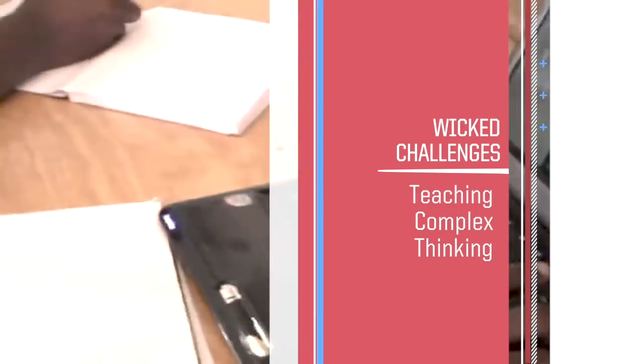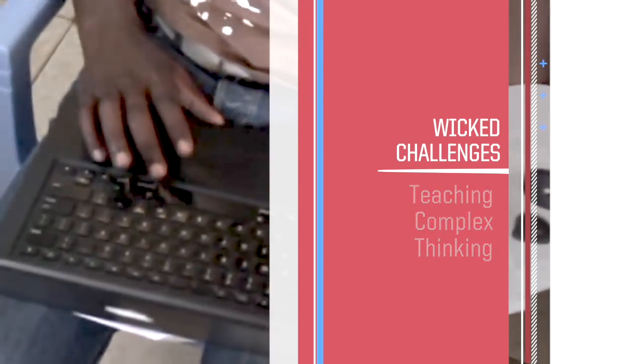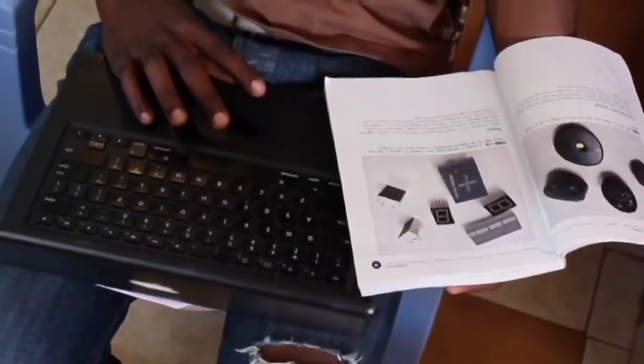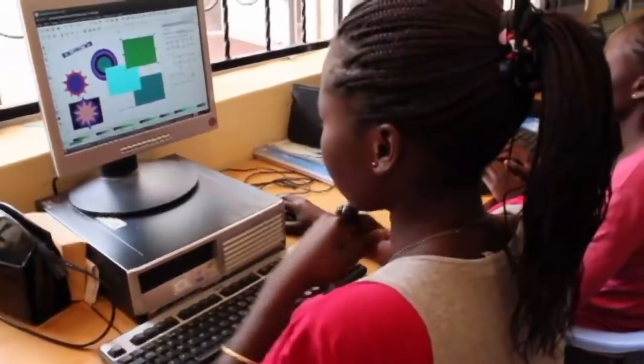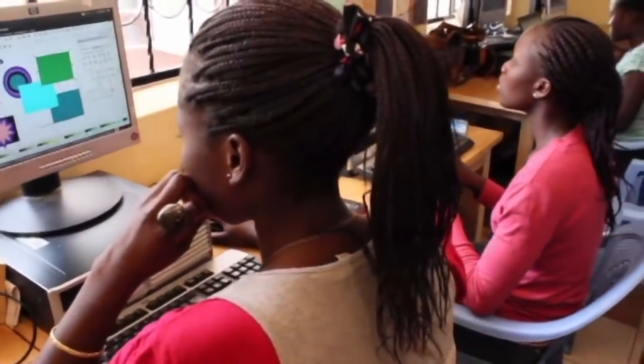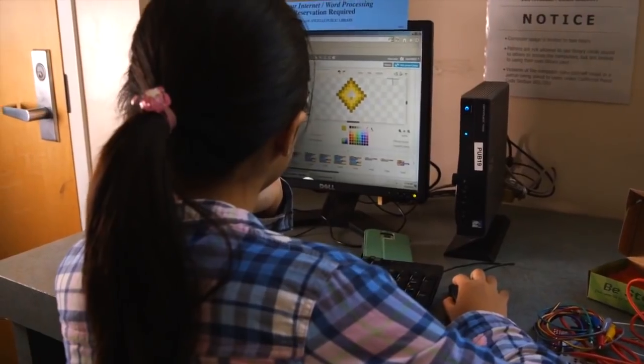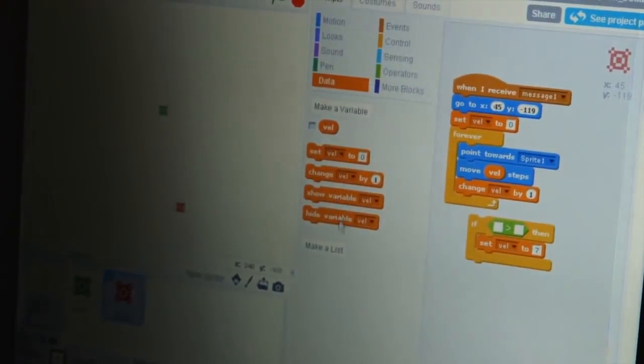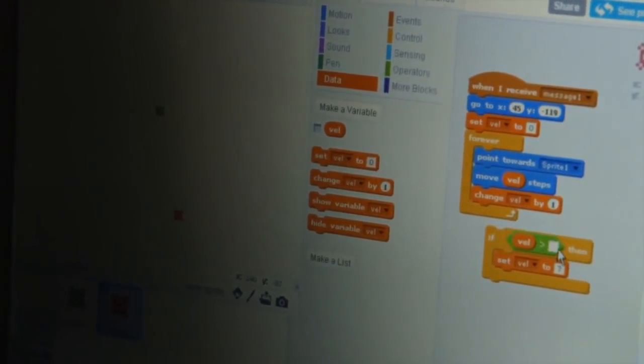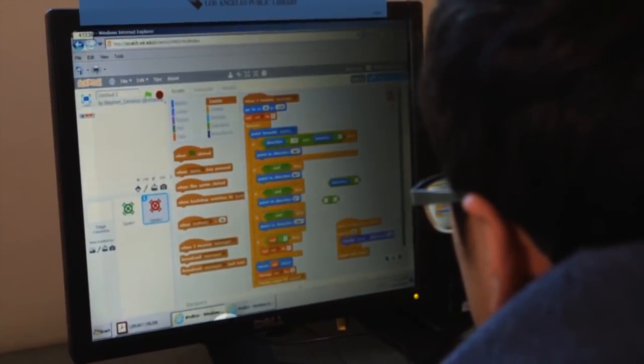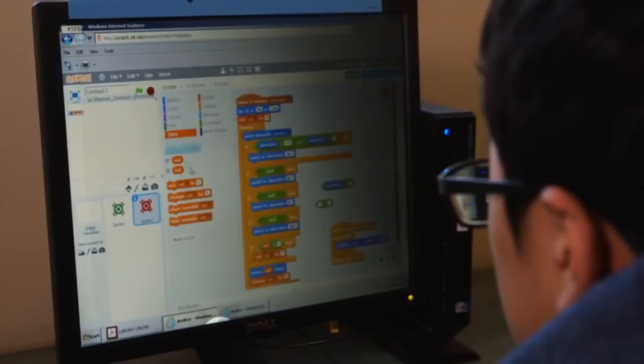Wicked challenges are those that are complex to define, let alone address. Complex thinking, for example, refers to the ability to understand complexity, a skill that is needed to comprehend how systems work in order to solve problems. Many schools are responding to the challenge of teaching complex thinking by facilitating coding classes and projects for K-12 students to start this learning at a young age.